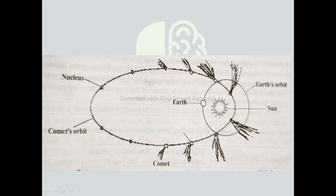When the comet approaches the Sun, its outer frozen mass melts and turns into vapor. The evaporating layer forms a hazardous cloud called the coma. The nucleus and coma together are called the head of the comet. When the comet approaches the Sun, the high-energy solar radiation pushes the vapor and dust of the comet to form a long tail. The tail is pointing away from the Sun due to the solar wind. The tail of some comets can cover a distance of 160 million kilometers. Comets can be seen with the naked eye due to their long tails when they approach the Sun. Comets do not have their own light; they become visible due to reflection of sunlight, so they are also called the tail star.